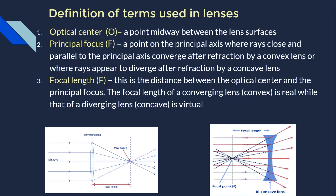Another term is the principal focus. This is a point on the principal axis where all rays close and parallel to the principal axis converge after refraction by a convex lens, or where rays appear to diverge from after refraction by a concave lens. For the concave lens, the rays are coming in and diverging from the lens, but if we produce these lines backwards, they appear to originate from this point — that is the principal focus for the concave lens.